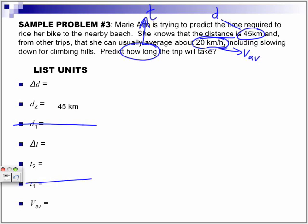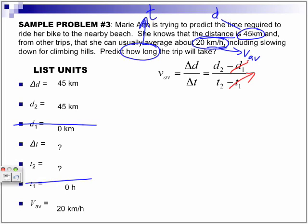So her final distance, 45 kilometers, and we knew that her initial distance was zero. So her delta D is 45 kilometers. Her time is what we're trying to find. We don't know how long it took her, because the question asks predict how long the trip will take. So we don't know that. So our delta T is what we're trying to find, which means our V_av is 20 kilometers per hour. So we start off with the initial equation. V_av is equal to delta D over delta T. Because our D value is zero, and our T value is zero, we don't limit this. All we need is the V_av and the delta D over delta T.